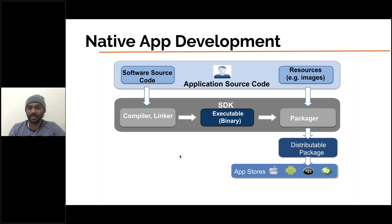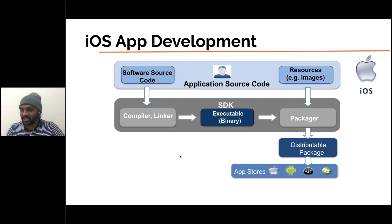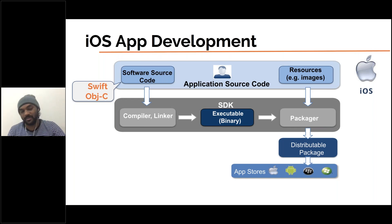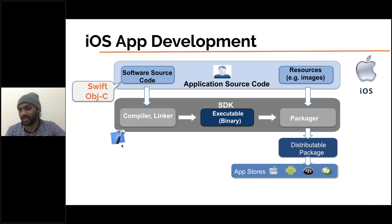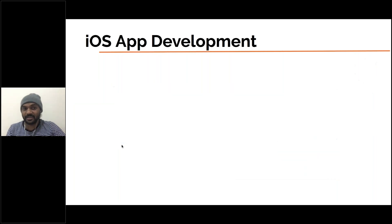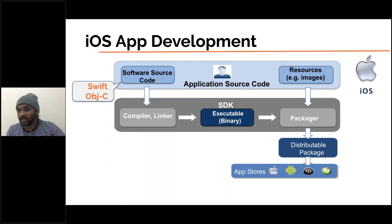Now consider iOS app development specifically. The code is implemented in Swift or Objective-C, sometimes C and C++ for kernel programming. The tool used is Xcode. The source code is compiled and linked through Xcode, which generates the binary for export, and it goes directly to the App Store.